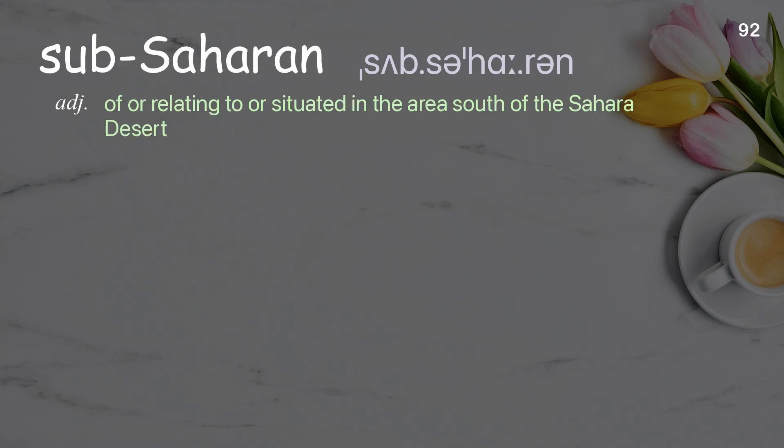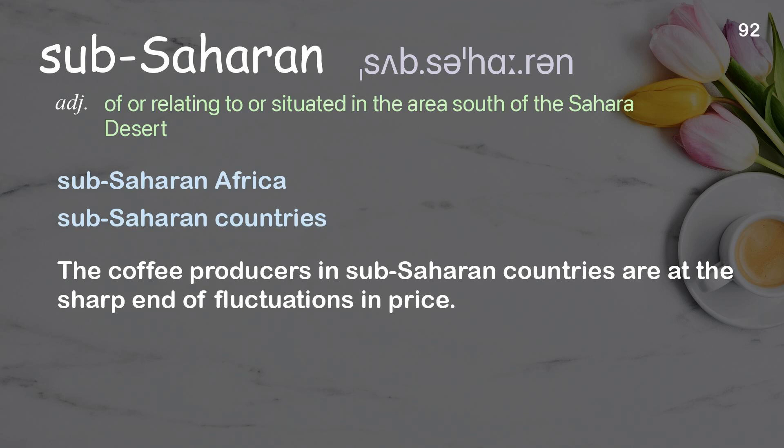Sub-Saharan. Of or relating to or situated in the area south of the Sahara Desert. Examples: Sub-Saharan Africa, Sub-Saharan countries. The coffee producers in sub-Saharan countries are at the sharp end of fluctuations in price.